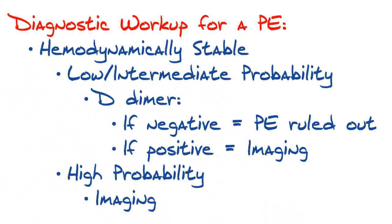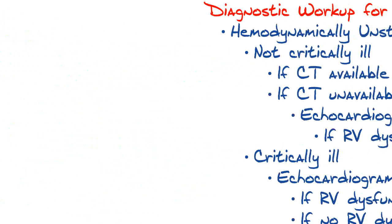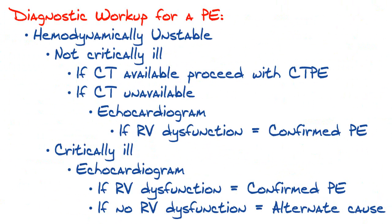For the diagnostic workup algorithm: if a patient is hemodynamically stable with low probability for PE, go ahead and do the D-dimer — if negative, PE is ruled out; if positive, obtain imaging. For hemodynamically unstable patients — those with shock or hypotension — if a CAT scan is available, proceed with a CT PE study. If a CAT scan is unavailable, proceed with an echocardiogram, either transthoracic or transesophageal, and look for right ventricular dysfunction, which would confirm a PE.